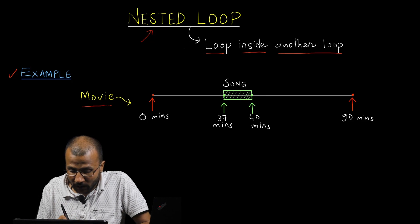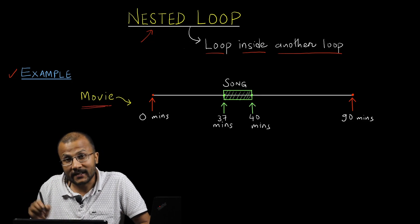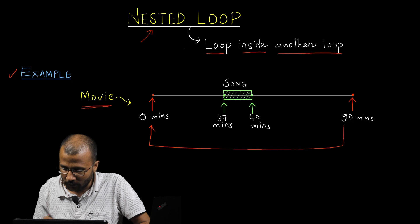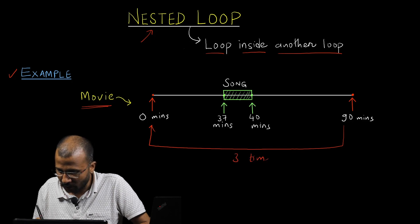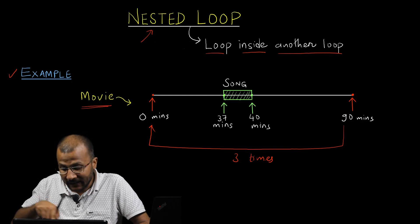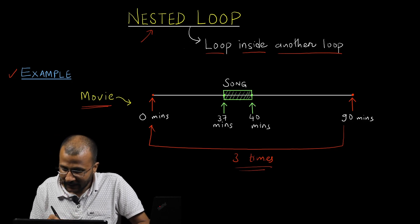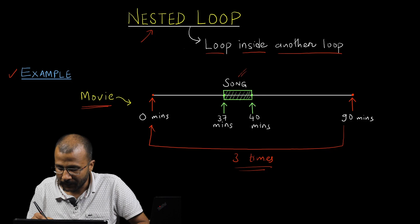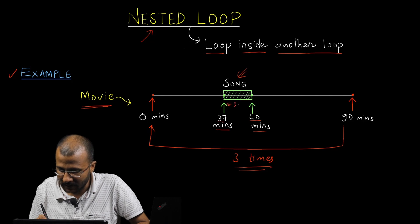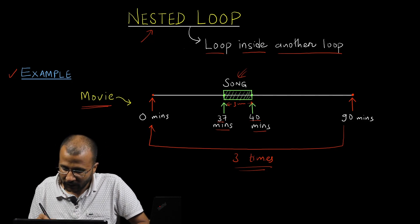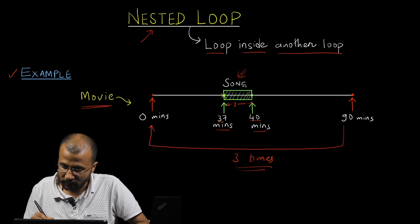Let's understand this with an example. Say you have a favorite movie you'd like to watch in repeat mode. This movie is 90 minutes long and you'd like to repeat it three times. While the movie is on, there is a song that starts at 37 minutes and ends at 40 minutes — a three-minute song. Whenever you reach that point, you'd like to repeat the song for two times.